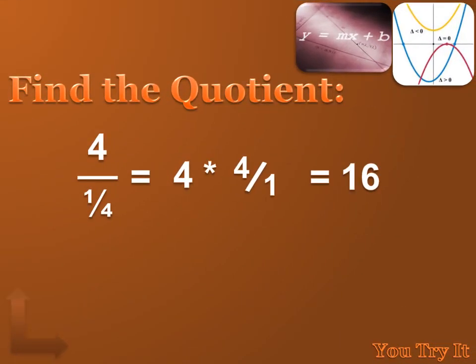Well, 4 divided by 1 fourth equals 4 times 4 over 1. And 4 times 4 over 1 equals 16 over 1, or 16. So, if you divide a number by a fraction, you're going to get a number bigger than your original number.